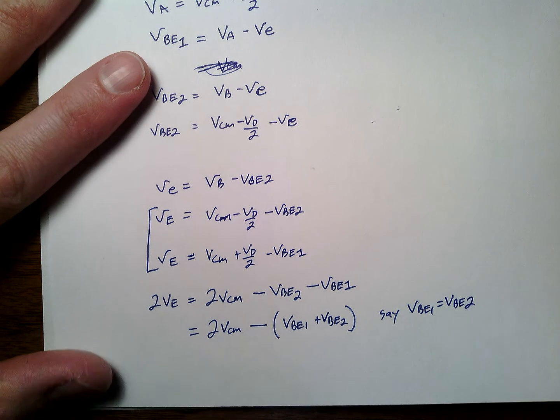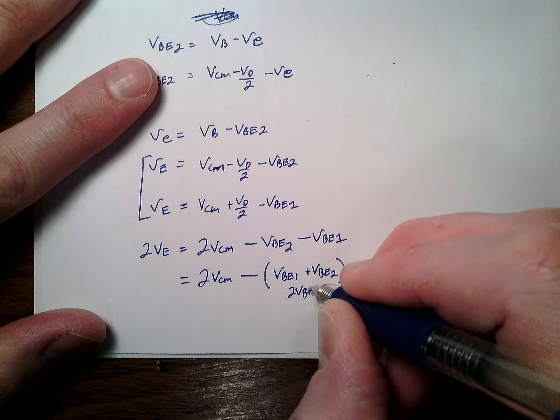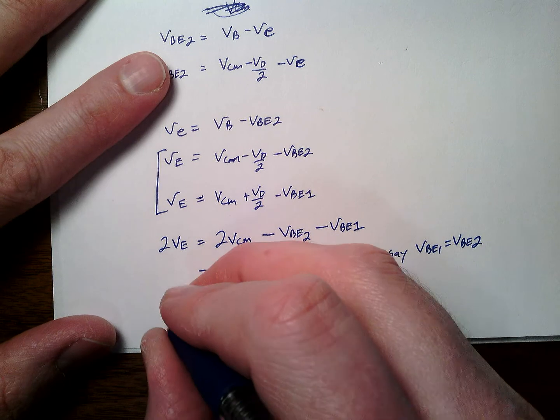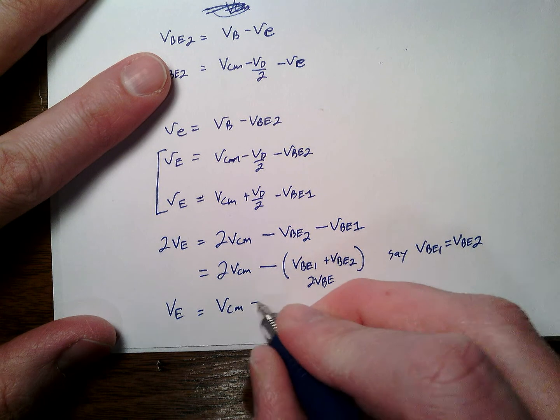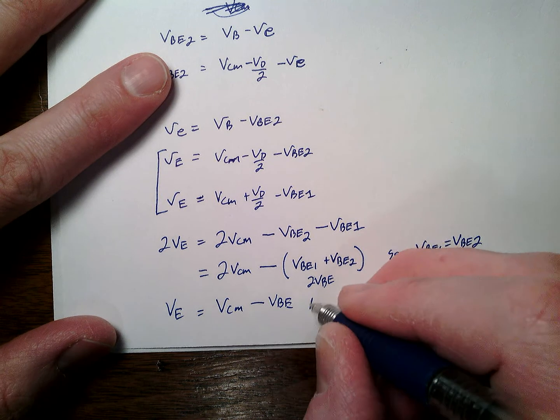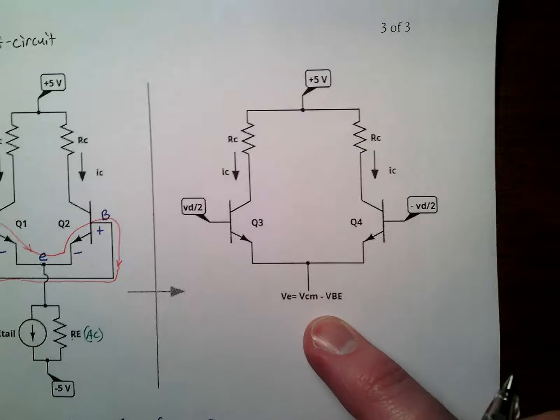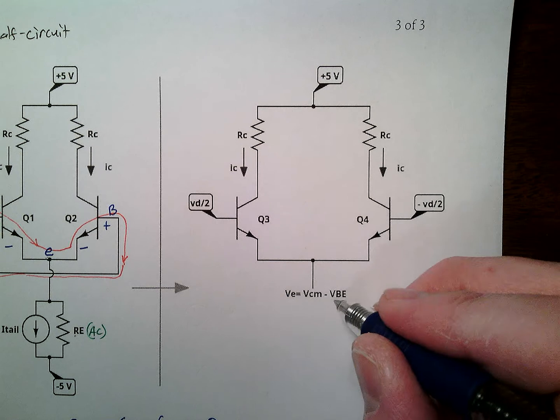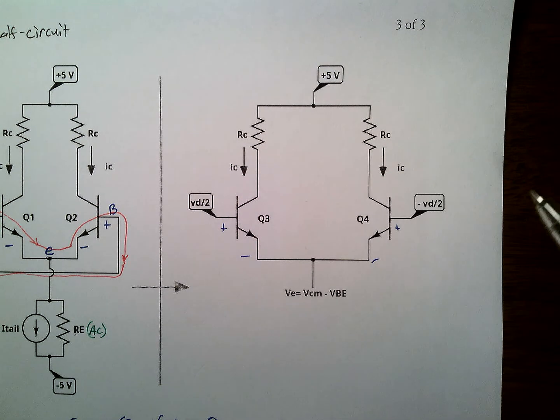We're going to say that VBE1 and VBE2 are the same. So this is 2VBE, which is like our 0.6 or 0.7. If we're working at DC, now we have VE is VCM minus VBE. Well, almost done. And you notice that's what we have up here. VCM minus VBE. Remember, this is only if these 2 VBEs are the same. And this is clearly what we have.